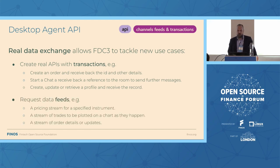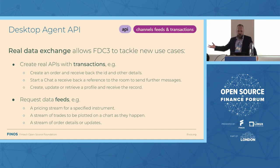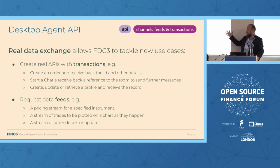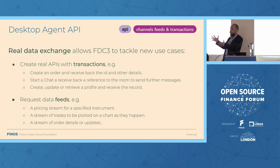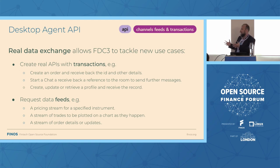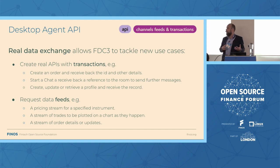We introduced a new channel type that allows you to synchronize that feed — start it up, clean it up when the consumer has gone away, so you're not just streaming data at an empty room. It also comes with the requirement that it's a private conversation: unless the app decides to give that channel out to another application, something else can't break in and start listening. Enabling real data exchanges mediated by the desktop agent allows FDC3 to tackle loads of new use cases — for example, creating a stream of trades or orders that can all be displayed alongside a pricing stream on a chart, without necessarily needing to know what other application or standard it's coming from.